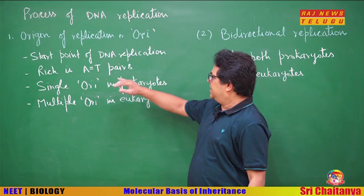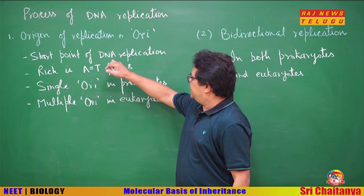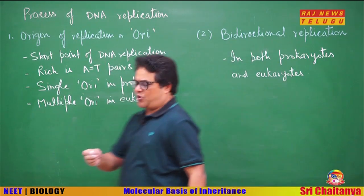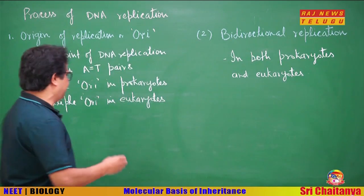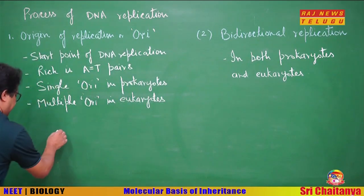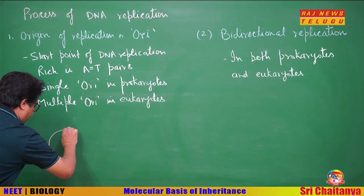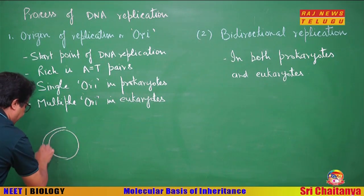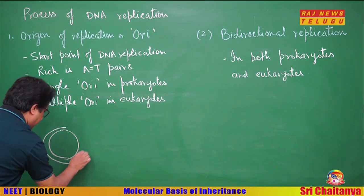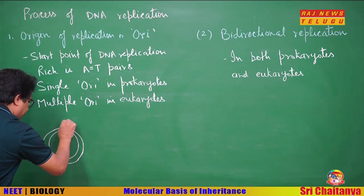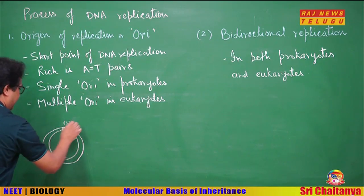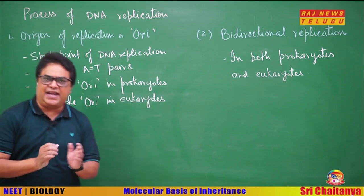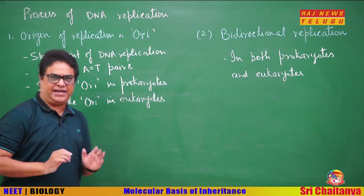ORI is single in prokaryotes. In bacteria, the bacterial DNA is circular, and there is a single ORI, because a small amount of DNA has to be replicated.